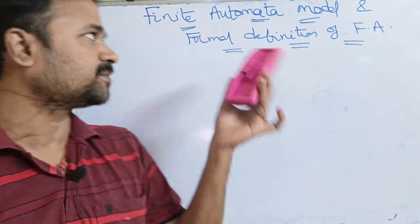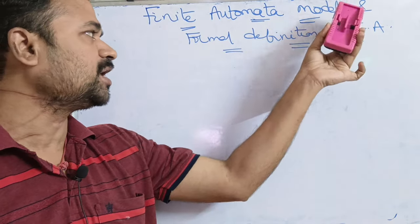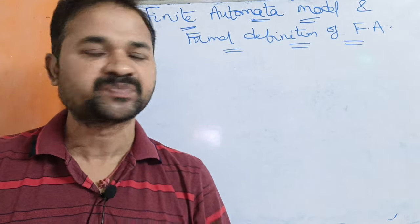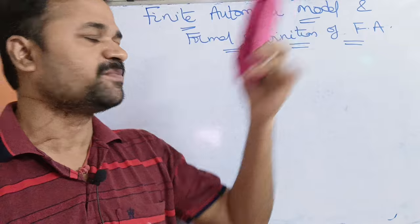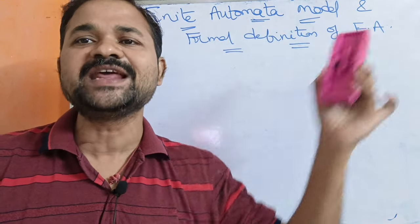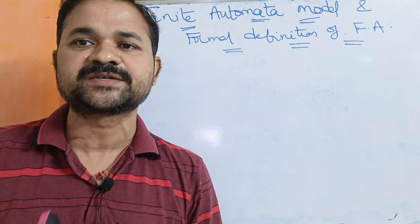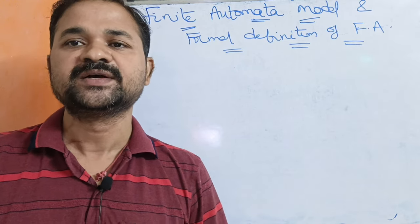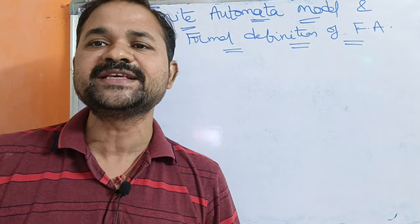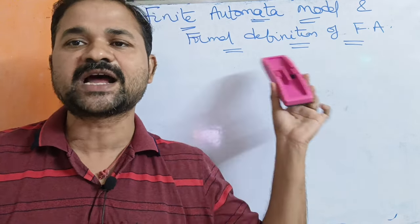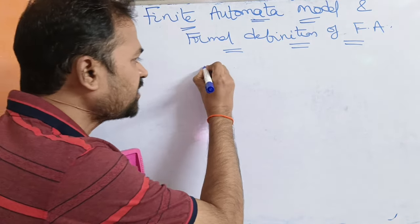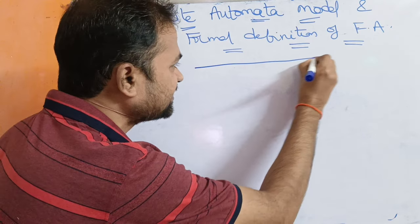Let us discuss the finite automata model and its formal definition. The finite automata model mainly contains three components: the first component is input tape, the second component is read head, and the third component is finite control. Let us draw the diagram for the finite automata model.